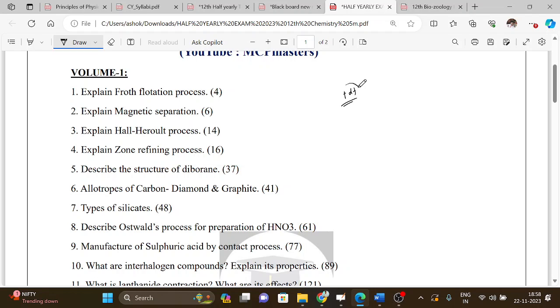So first question is explain froth flotation process, page number 4. Second question is explain magnetic separation, sometimes 3 marks. And Hall-Heroult process, that is important. Electrolytic refining, important question, but that is 5 marks and 3 marks chances. Explain electrochemical extraction of aluminium, that is what we can do. Then explain zone refining process, important for public exam.